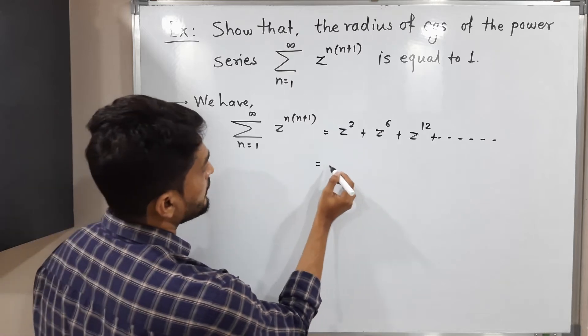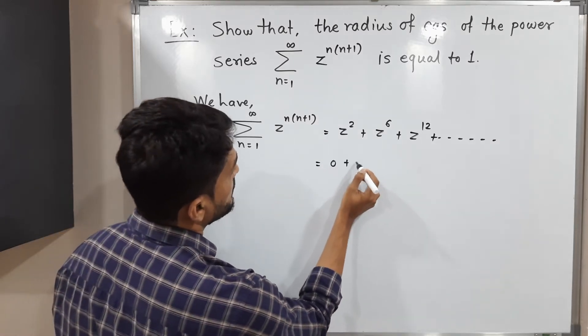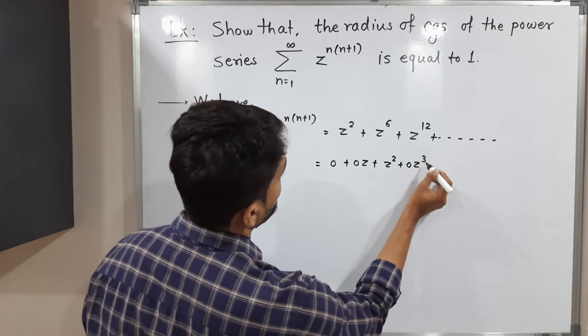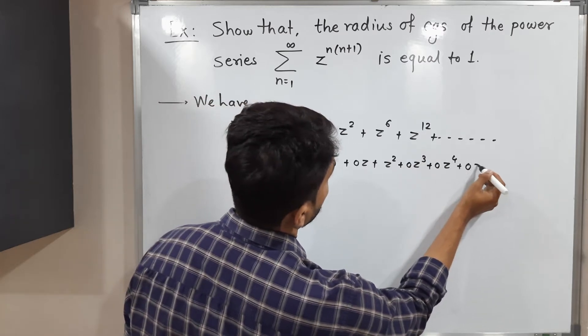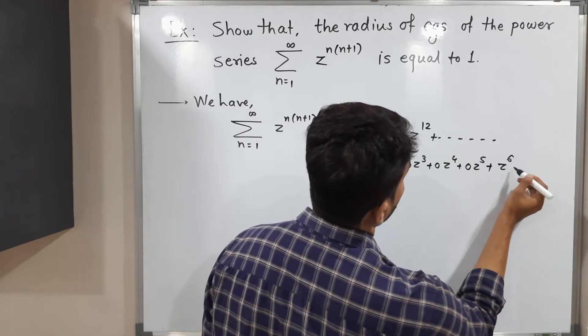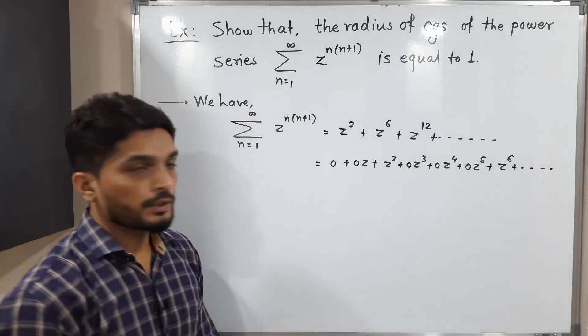So actually this series is nothing but 0 plus 0z plus z square plus 0z cube plus 0z raised to 4 plus 0z raised to 5 plus after that we have z raised to 6 and so on. So what does it mean?